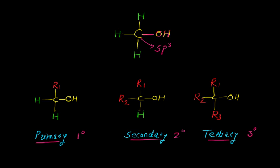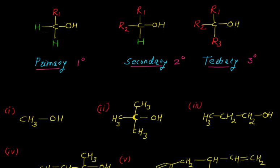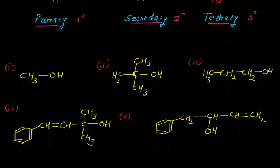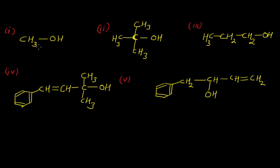Now let us take some examples to identify whether these compounds are primary, secondary, or tertiary alcohol. In example 1, the compound is methanol, and all three hydrogen atoms are present as they are on the sp3 hybridized carbon atom. Therefore this alcohol is a primary alcohol.